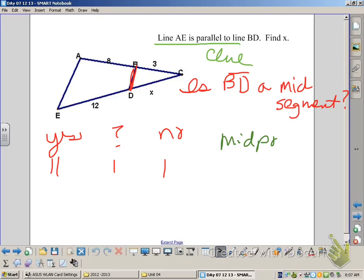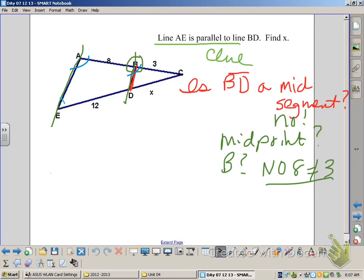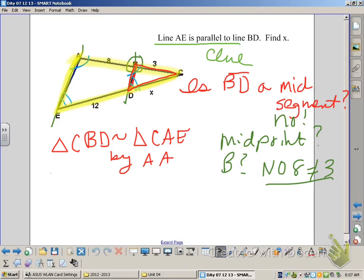Some students thought it was yes, some said no, some said they didn't know. So we want to see if B is a midpoint. If B is a midpoint, 8 and 3 would be equal, but they're not, so we know B isn't a midpoint. We do know, however, we have similar triangles. So we can set up a proportion to solve for X.